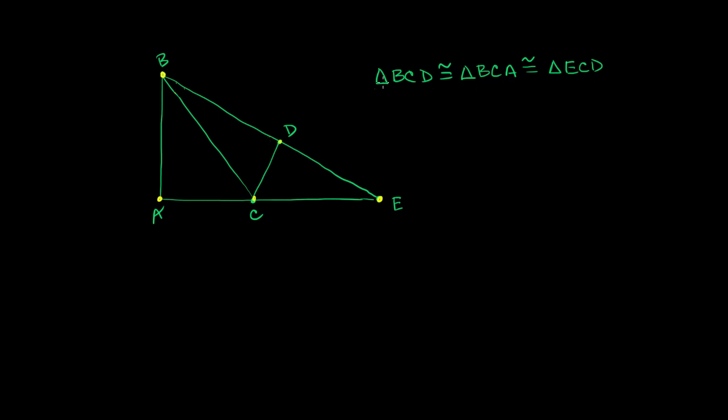So let's see what we can do here. Let's just start with the information that they've actually given us. So we know that triangle BCD is congruent to BCA. We know it's congruent - all of these three triangles are congruent to each other. So for example, BCD is congruent to ECD.